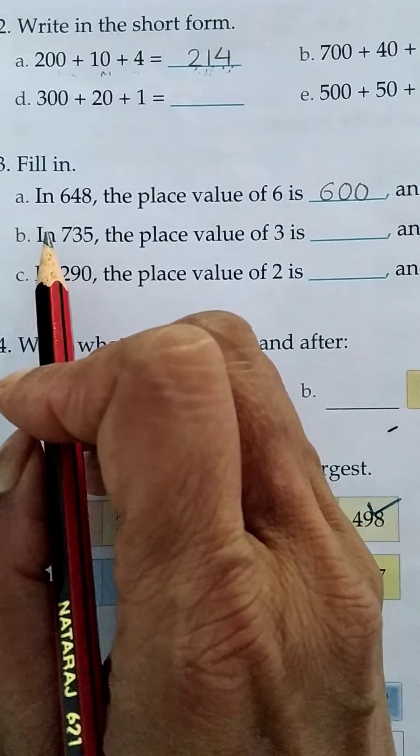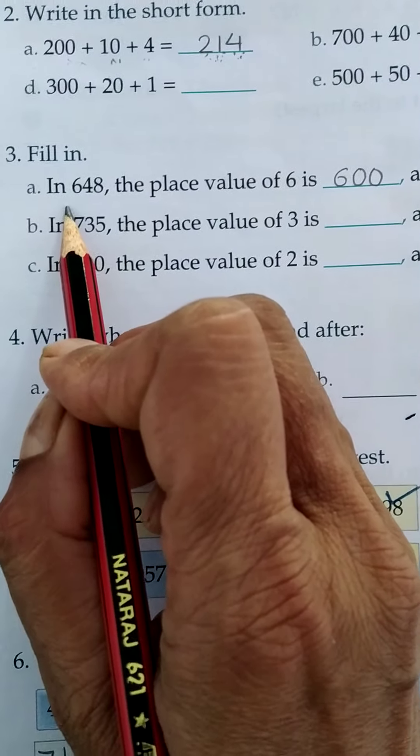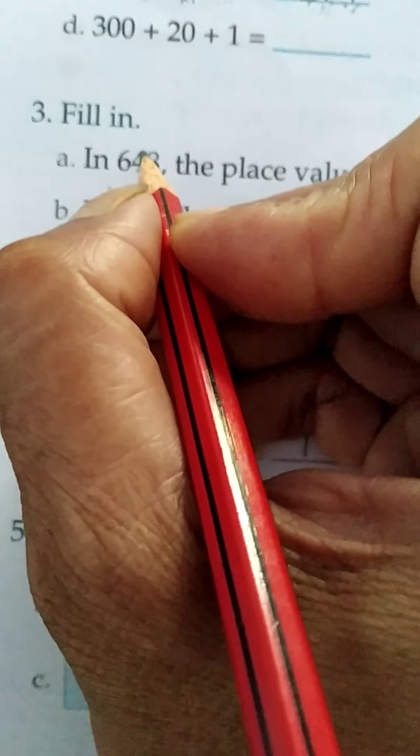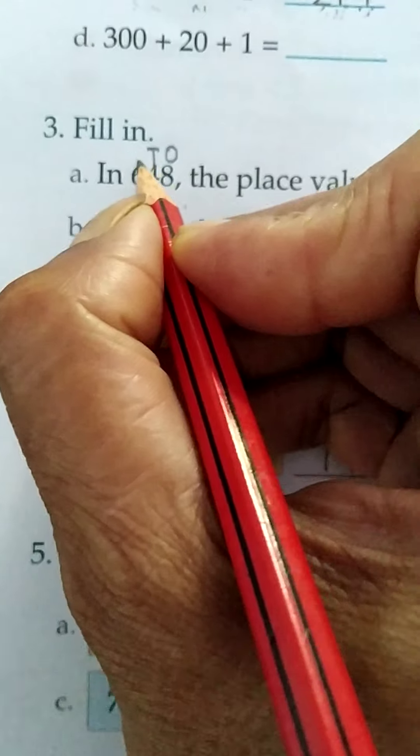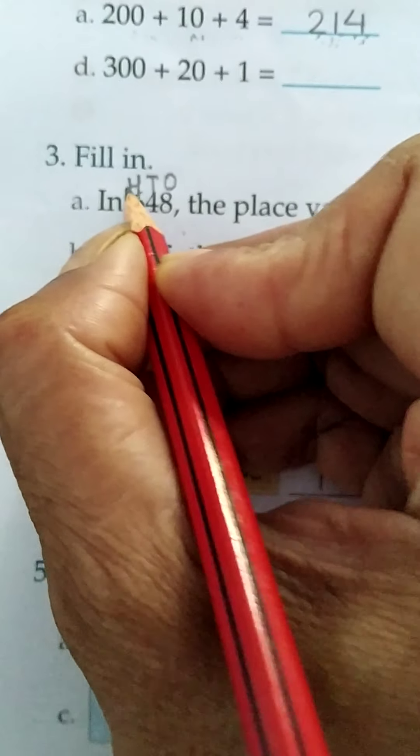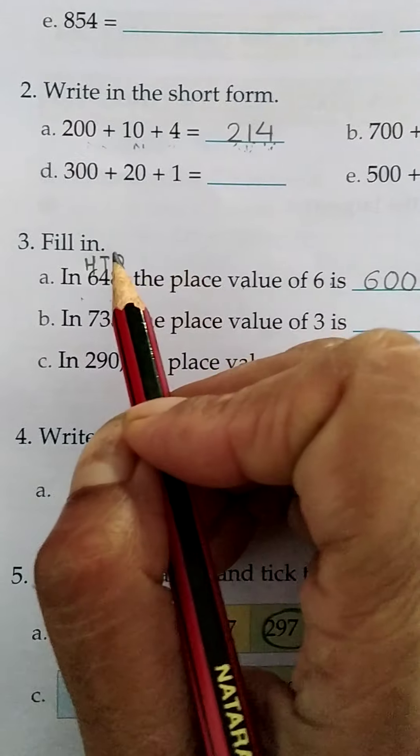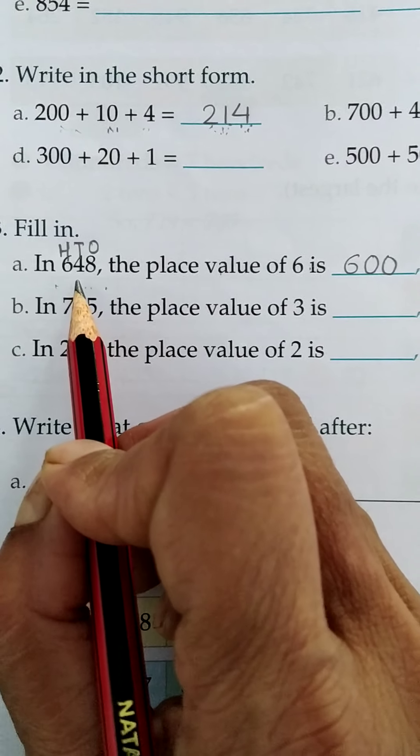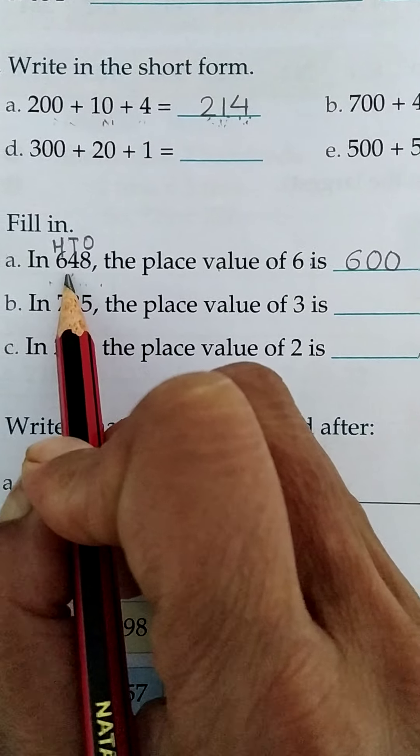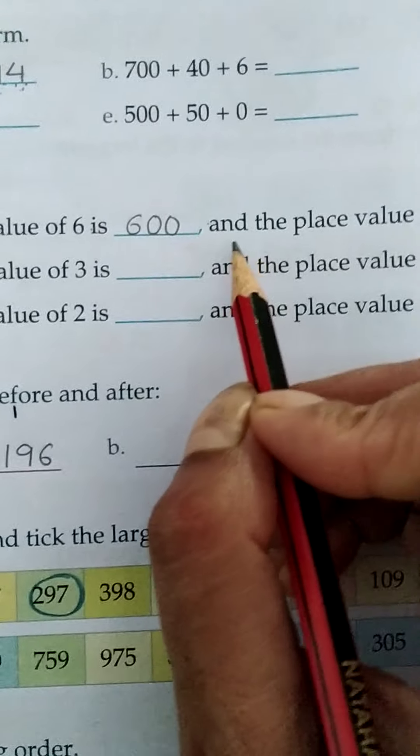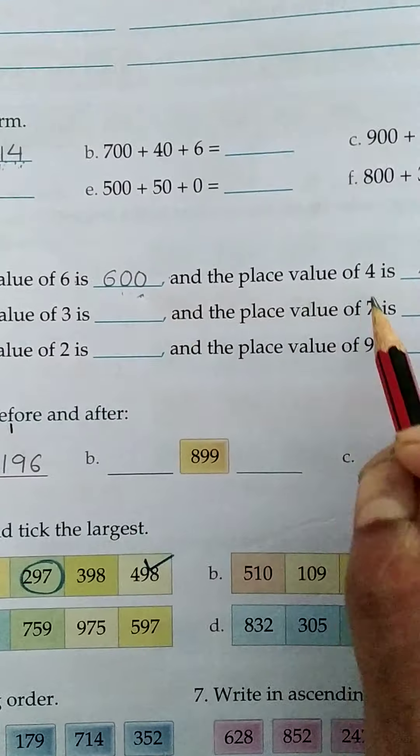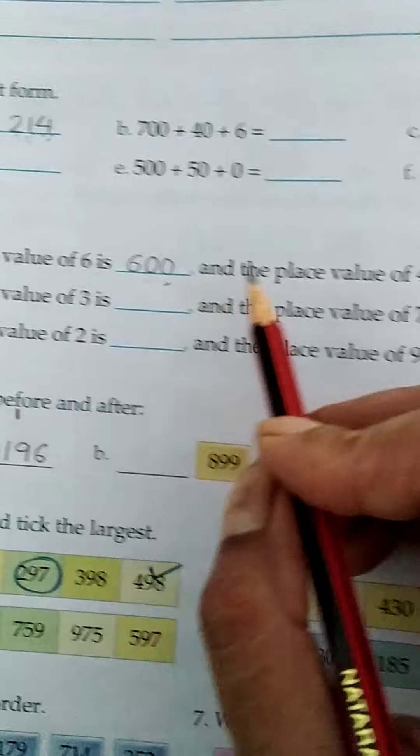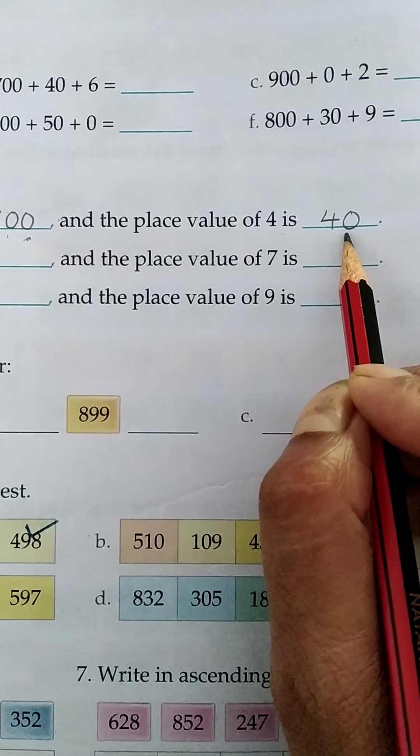Number 3. Fill in. In A, in 648, the place value of 6. Here you also write the units. Ones, tens, and hundreds. It is just for your help. Your answer will never be wrong if you write this. 648. So students tell me what is the place value of 6? Of course 600. You know very well. So we write here the place value of 6 is 600. And the place value of 4 is 40 because 4 is coming on the tens place. So we write the value of 4 is 40.